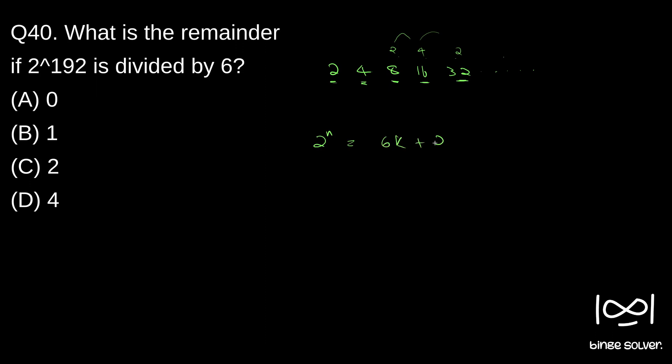With 6k plus 2 as remainder, as you can see there is a number like this where n is 3, so we can find a number 2 raised to n such that remainder is 2 when dividing by 6.